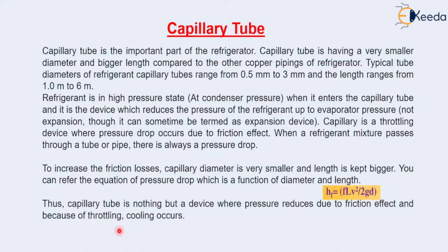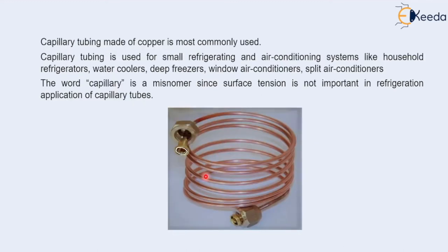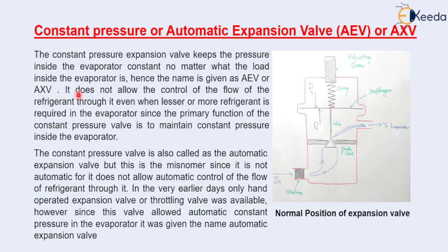Thus the capillary tube is nothing but a device where pressure is reduced due to friction effect, and because of this throttling, cooling occurs. The capillary tube is made of copper and is most commonly used. Capillary tubing is used for small refrigerating and air conditioning systems like household refrigerators, water coolers, deep freezers, window air conditioners, and split air conditioners. Note that the word 'capillary' is a misnomer here, since surface tension — which relates to capillary effect — has no relation with refrigeration application.